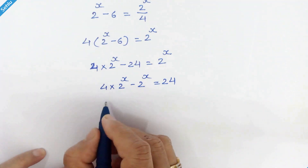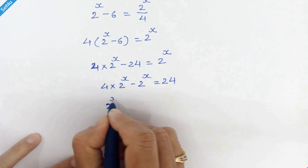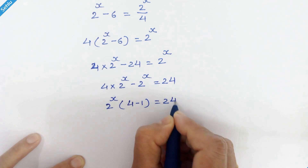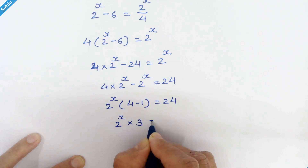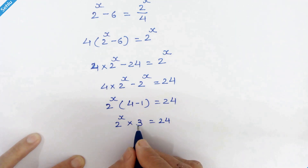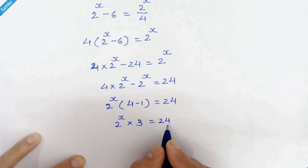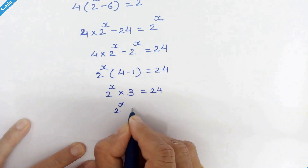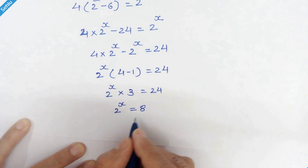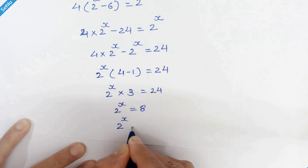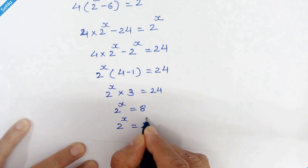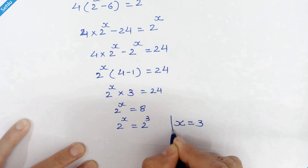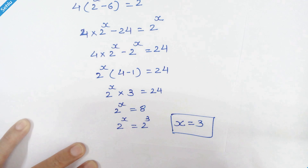We can factor out 2 raised to x. So we have 2 raised to x times 3 is equal to 24. If we move this 3 to the right hand side it will be 8. So we have 2 raised to x is equal to 8. Since 8 is 2 cubed, we can write 2 raised to x is equal to 2 cubed. We have the same base, so we can equate their exponents. So x is equal to 3 is our answer. Thanks for watching.